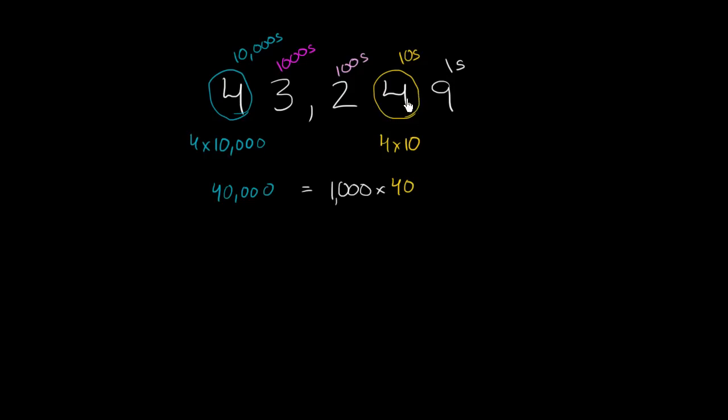Now, another way of thinking about it is every time you move place values to the left, as you see here - this is tens, hundreds, thousands, ten thousands - you're increasing what those place values represent by a factor of 10.